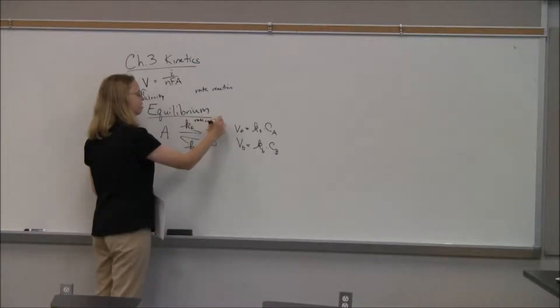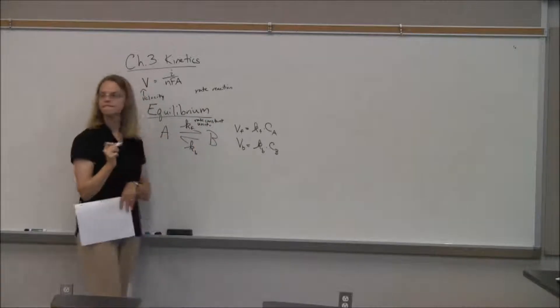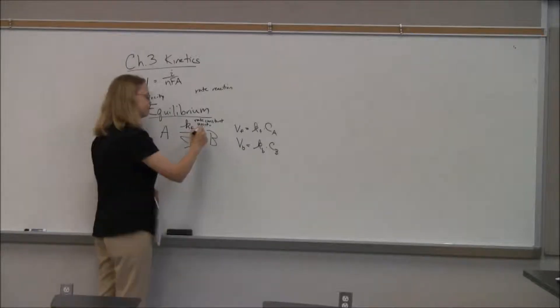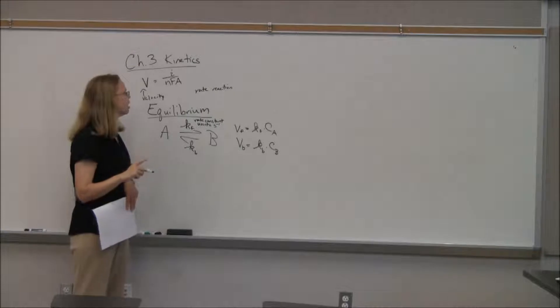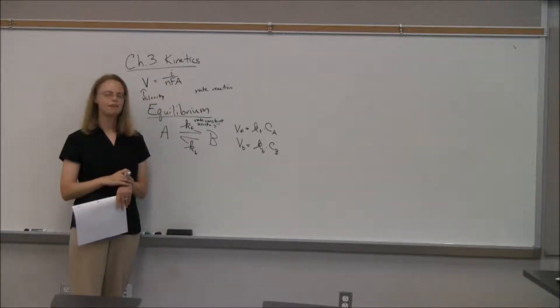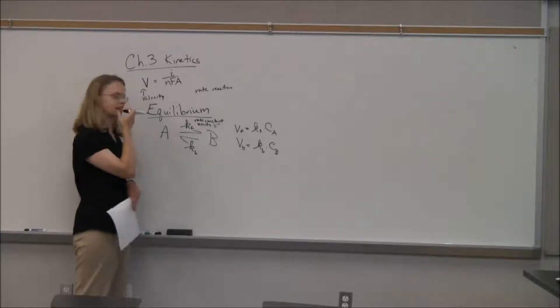There'd be some sort of forward reaction rate, and there'd be some backwards reaction rate. And the velocity to go forward is just K forward times the concentration of A. And the velocity to go backwards is K backwards times the concentration of B.